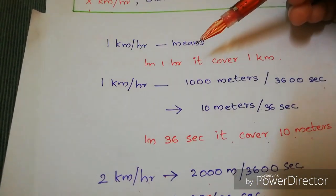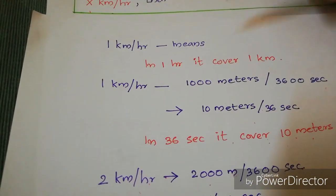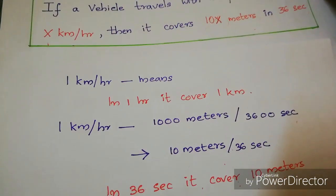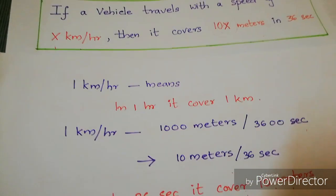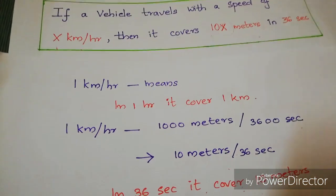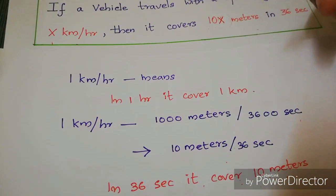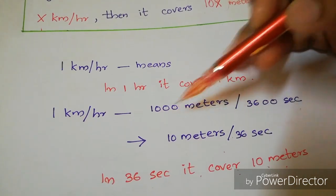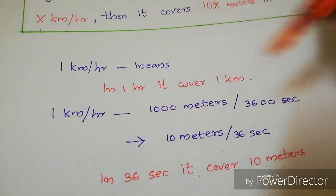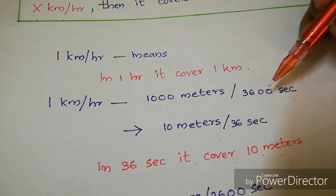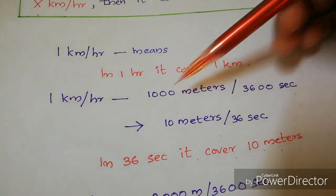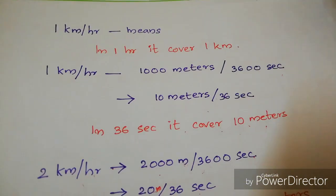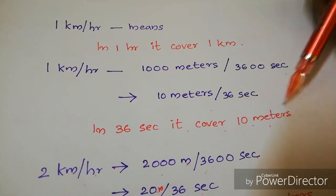Here's the proof: 1 kilometer per hour means in one hour it covers 1 kilometer. Converting to meters per second: 1 kilometer equals 1000 meters and 1 hour equals 3600 seconds. Simplifying, we get 10 meters per 36 seconds — that is, in 36 seconds it covers 10 meters.